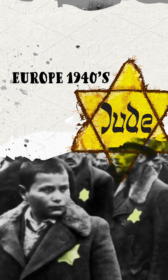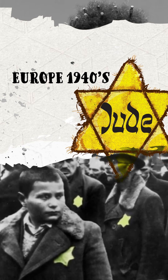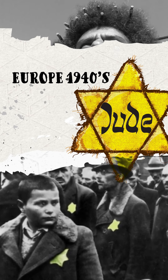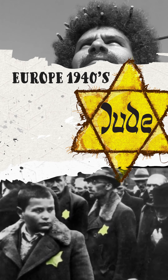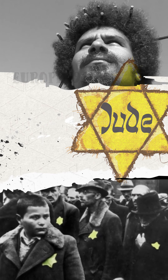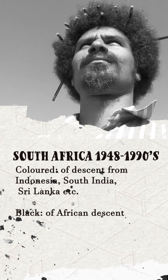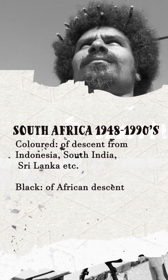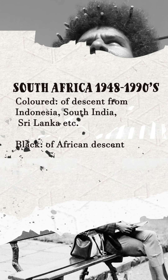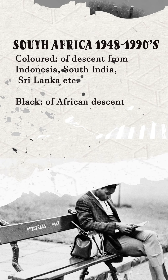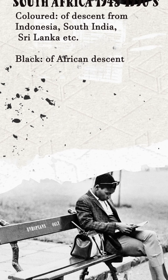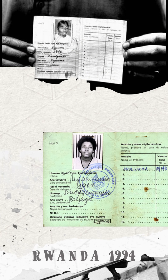We see examples of this during World War II, when Jews in Europe were required to wear a star. In South Africa's apartheid regime, with the pencil hair test distinguishing colored from black, and in Rwanda, where a social class of Hutu or Tutsi was marked on ID cards.